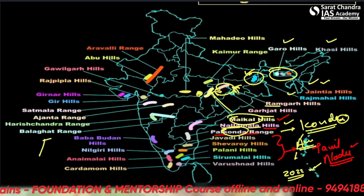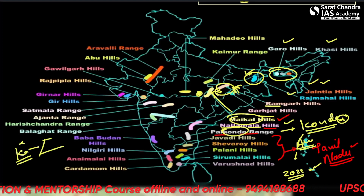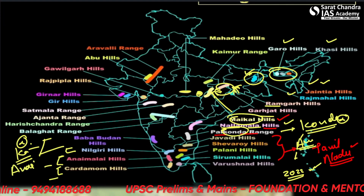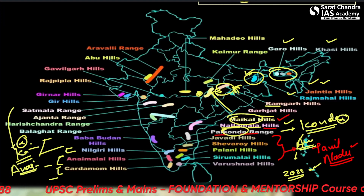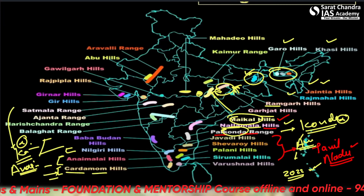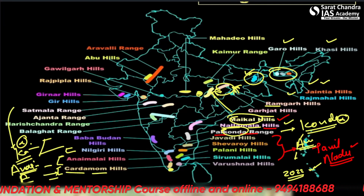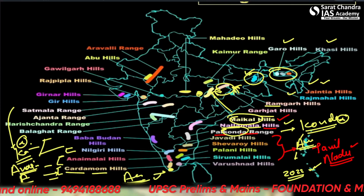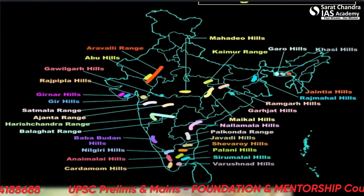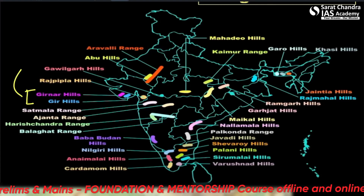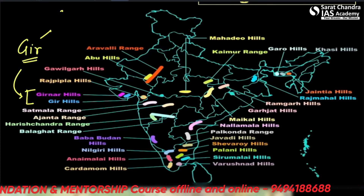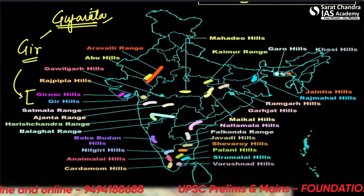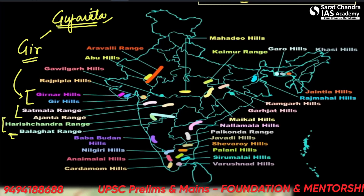Moving further: Baba Budhan Hills are in Karnataka — very important to remember. Then Nilgiri, Annamalai, and Cardamom Hills follow. Anaimudi is the highest peak in Western Ghats — please remember this repeatedly. Cardamom Hills are famous for cardamom agriculture. Then there are Agasthyamalai Hills. Satmala, Ajanta, Harishchandra Range, and Balaghat Range — all run transverse to the Western Ghats and are part of the Central Indian Ranges. They should be remembered together as a group.